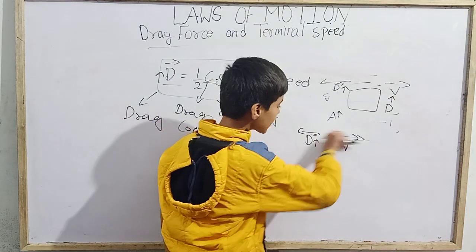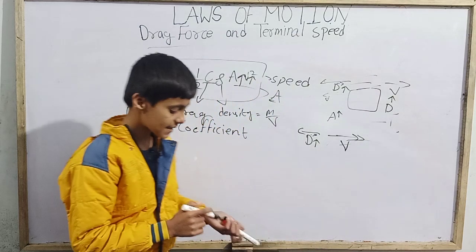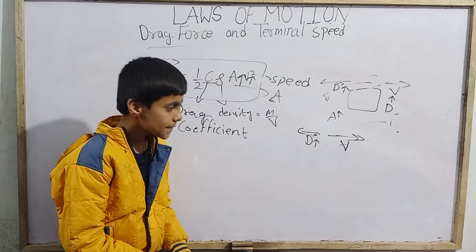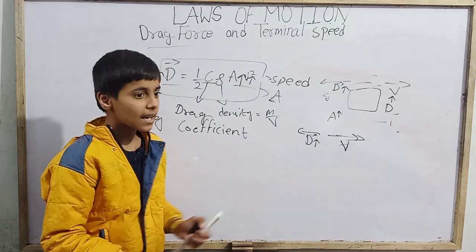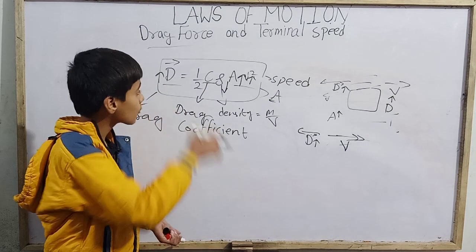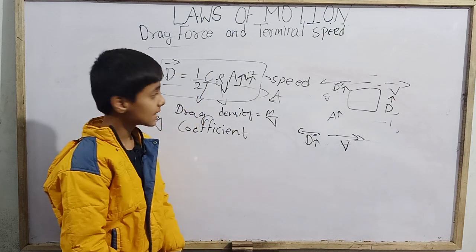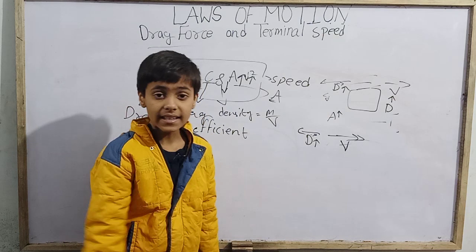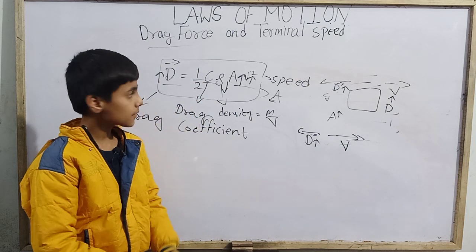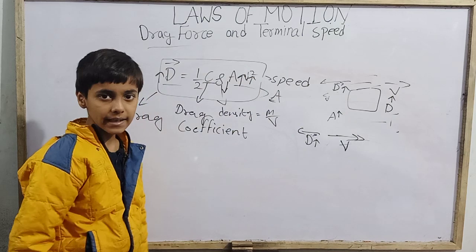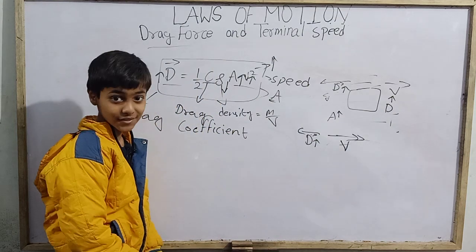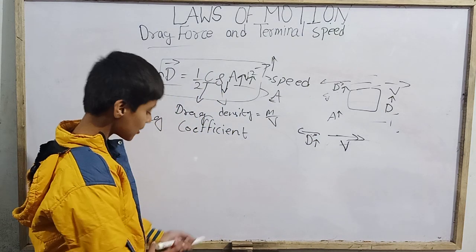As drag force increases, the particle starts decelerating. That's why, if you are going on a skateboard or riding a bicycle and you want to attain higher speed, you should decrease your area of contact with the air — for example, by crouching into a low position. This reduces drag force and allows you to attain higher velocity.